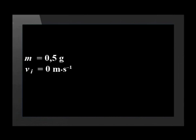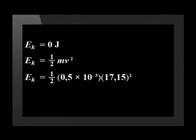The initial velocity is 0 m/s and the final velocity is 17.15 m/s. Substituting correctly into the kinetic energy formula, the initial kinetic energy is 0 joules and the final kinetic energy is 0.74 joules. Positive work done does not just increase the velocity of the object, but its kinetic energy as well.